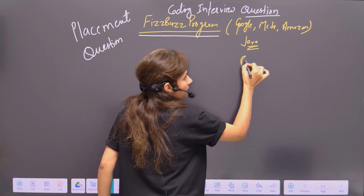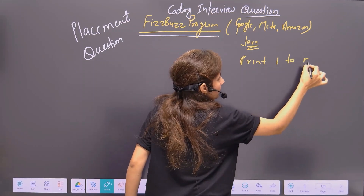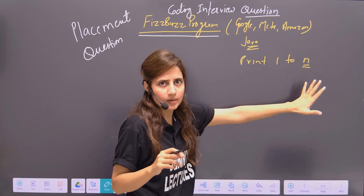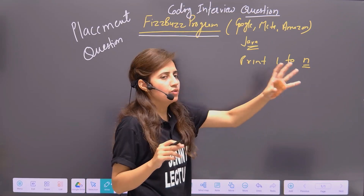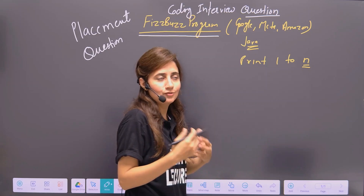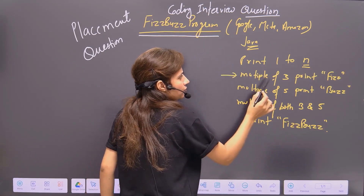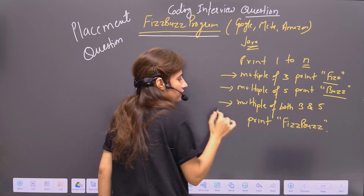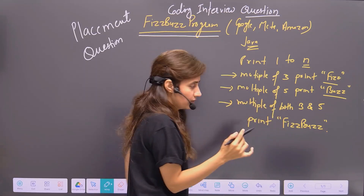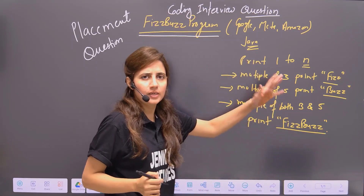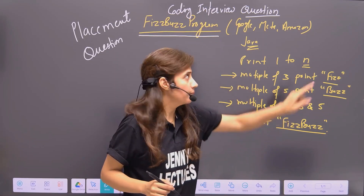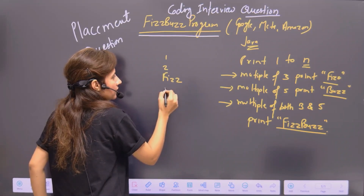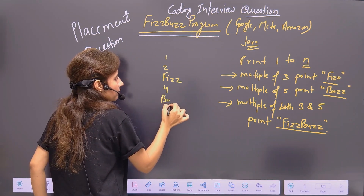You have to print numbers from 1 to N, where the user enters a value like 1 to 5, 1 to 15, or 1 to 10. But rather than printing simple numbers, a few conditions are added: if the number is a multiple of 3, print 'Fizz'; if a multiple of 5, print 'Buzz'; if a multiple of both 3 and 5, print 'FizzBuzz'; otherwise print the number. For example, if N is 5, the output should be: 1, 2, Fizz, 4, Buzz.